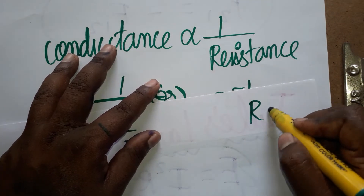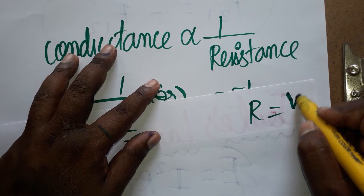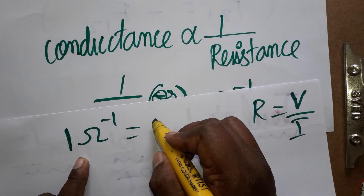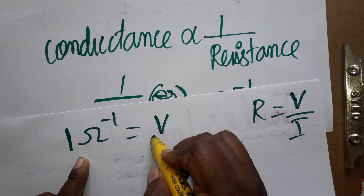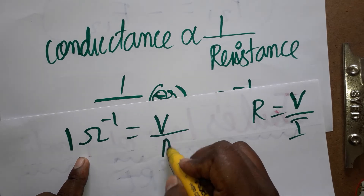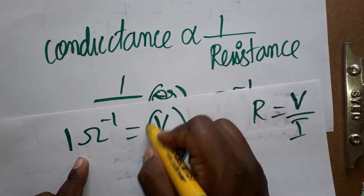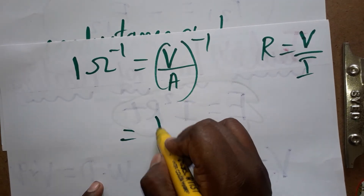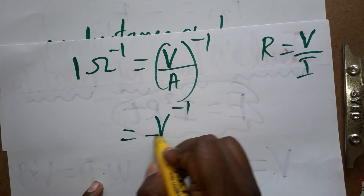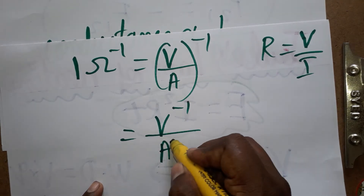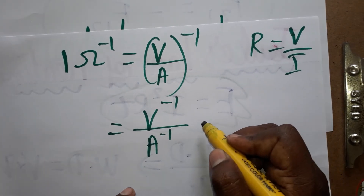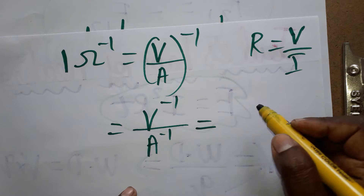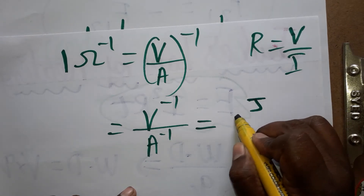Since resistance is equal to V by I, ohm inverse becomes I by V, which is ampere per volt. So conductance has units of V inverse times ampere, i.e., volt inverse ampere. Now, what is V? V is voltage, and voltage is work done per charge.